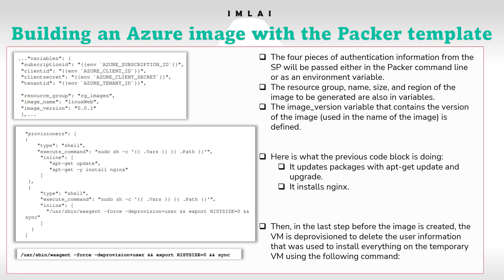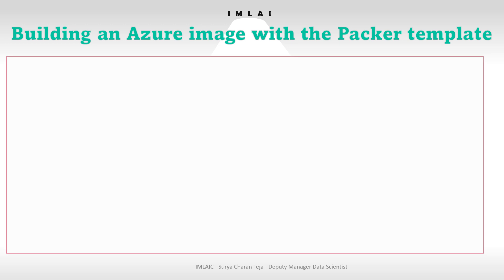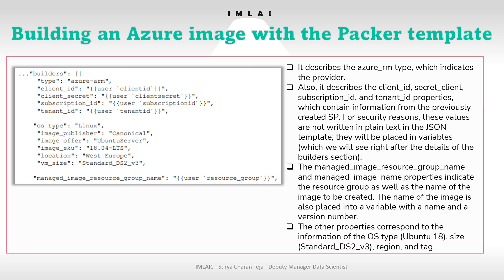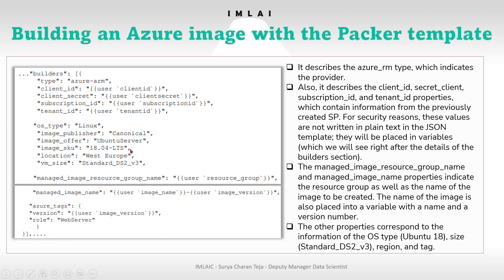Now let's look at one more example — building an Azure image with a Packer template. Here we have the builders section with azure-arm and OS type Linux. This section describes the azure-rm type — which type of virtual machine you want — and also indicates the provider, client ID, client secret, subscription ID, tenant ID, and all the properties. I just want to expose you to more code before we jump into the actual practical demonstration.